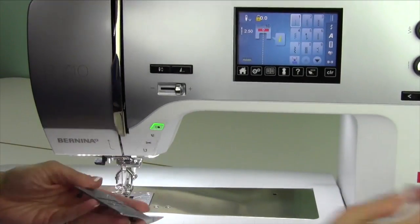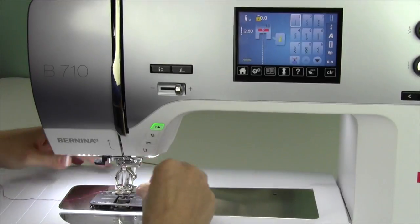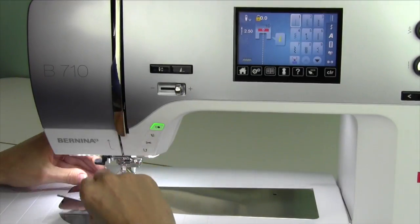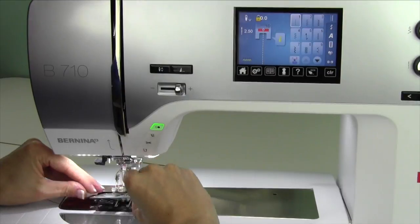Start off by lowering your feed dogs. That's always easier to get the plate on and off. Push down on the bullseye in the back right-hand corner, and then switch it on over just like a regular throat plate.